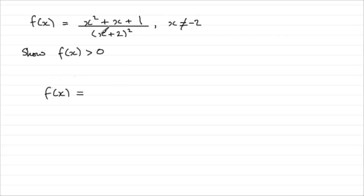We can clearly see that the denominator is greater than zero because this term x plus 2 is squared. Anything squared is always going to be positive. So what we've got is a positive quantity divided by a positive quantity, which has always got to be greater than zero.